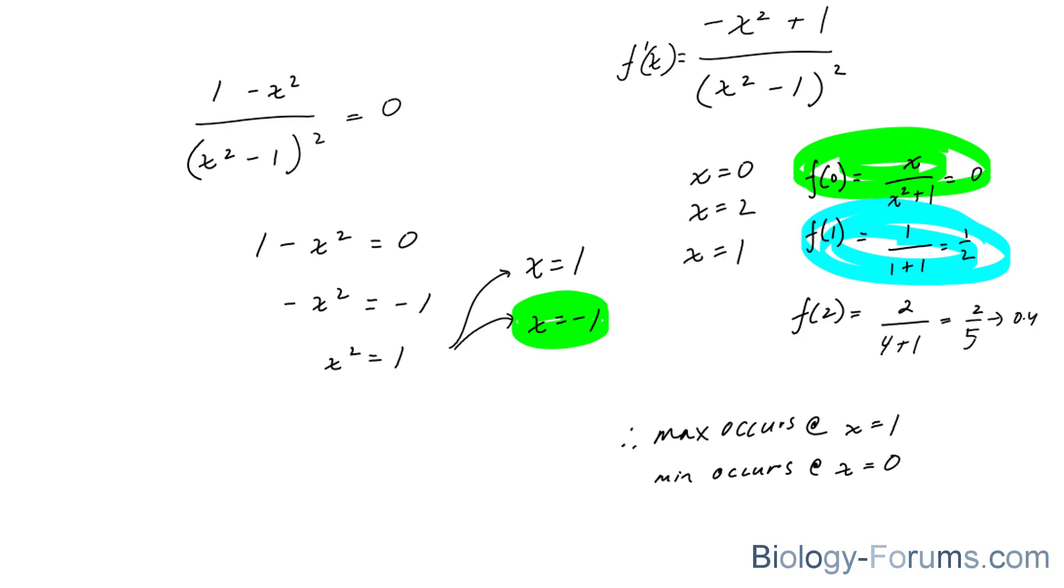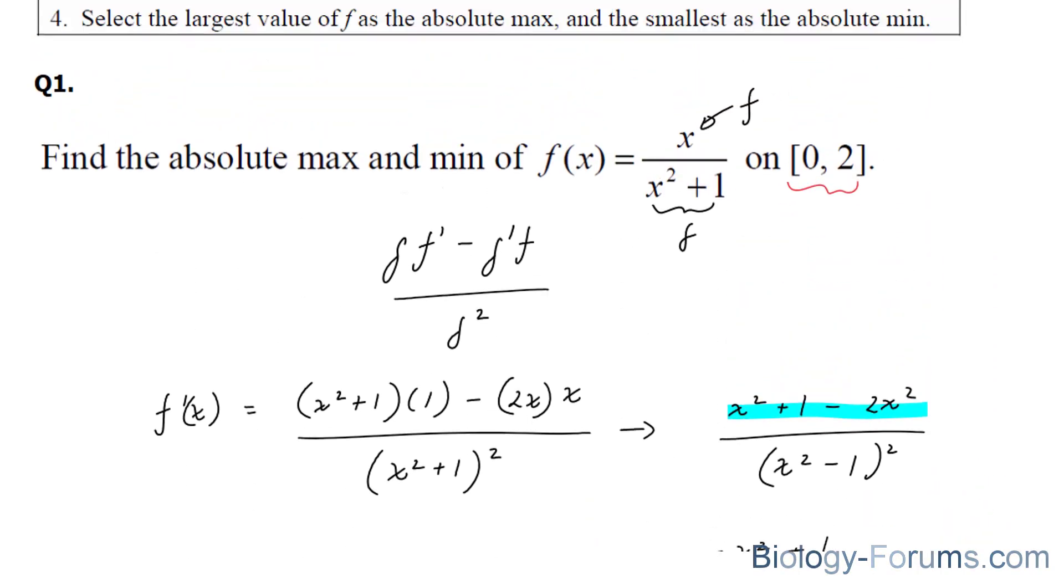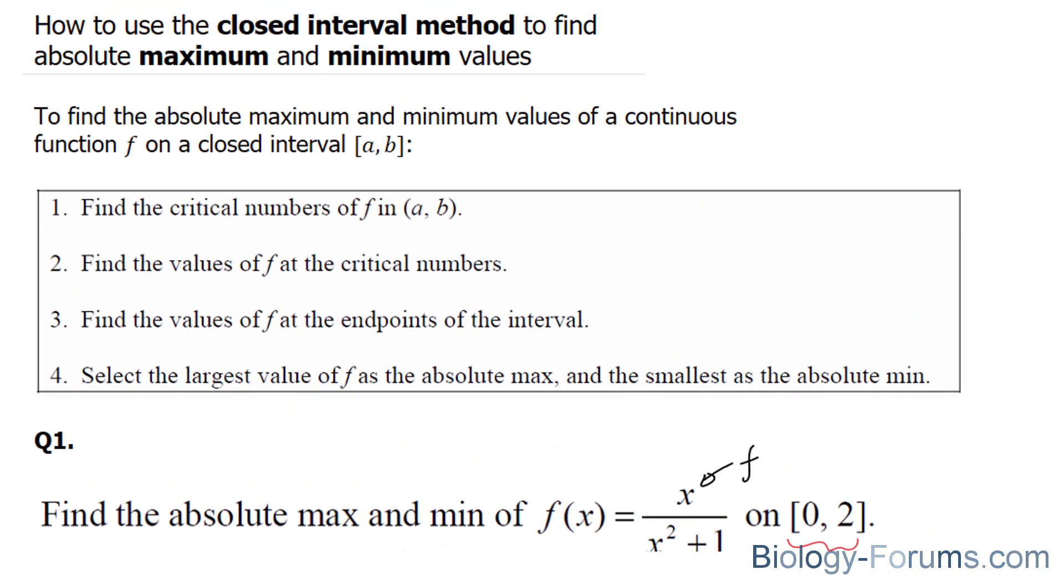There you have it. That is how to find the maximum and minimum values using the closed interval method. If you found this tutorial helpful, please support our channel by subscribing or by liking this video. If you have any further questions, you may visit our website at biology-forums.com. We are an online service for students seeking free homework help.